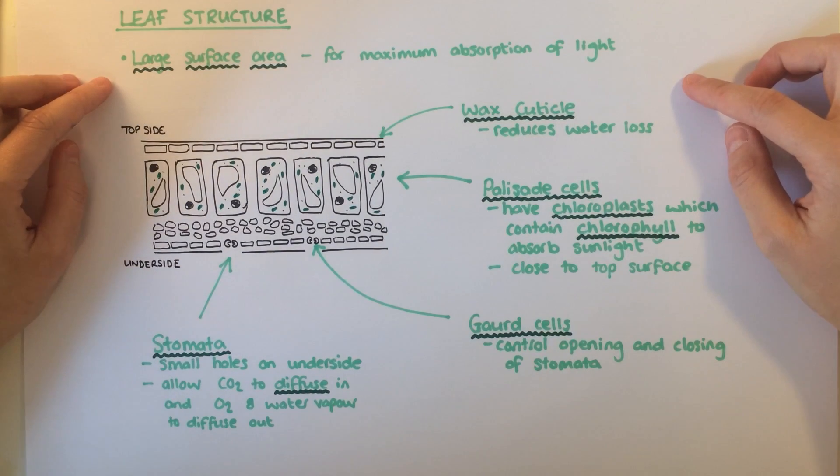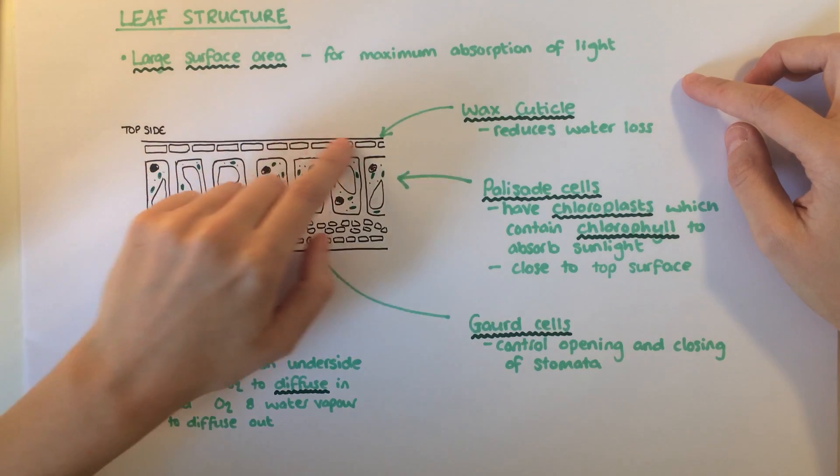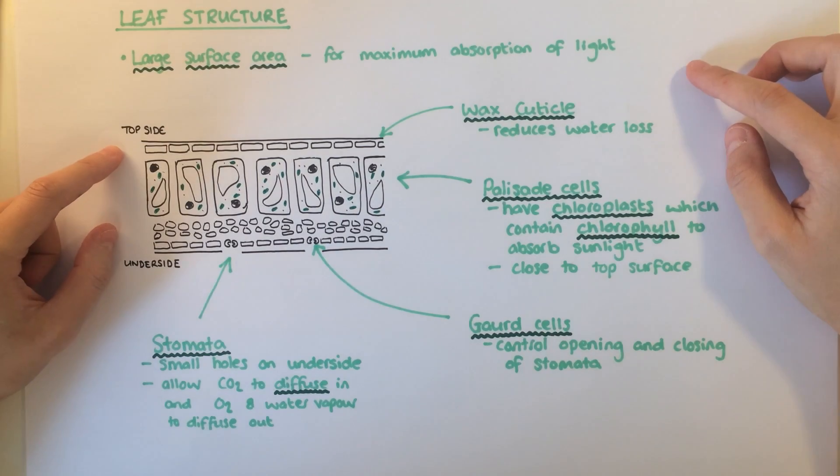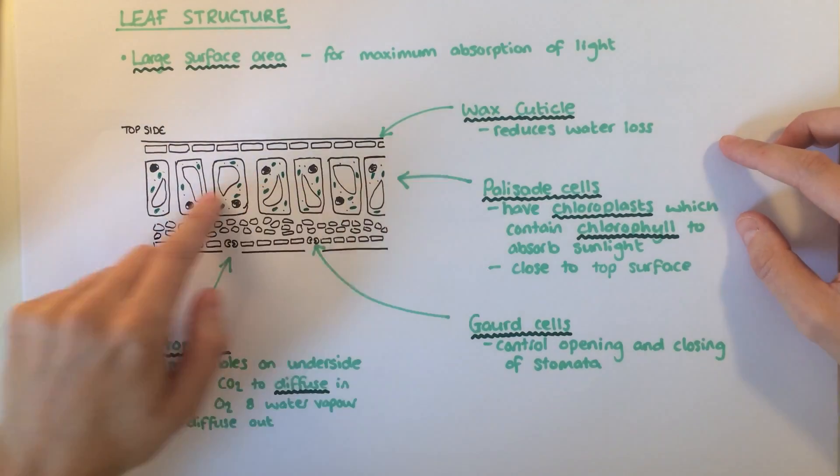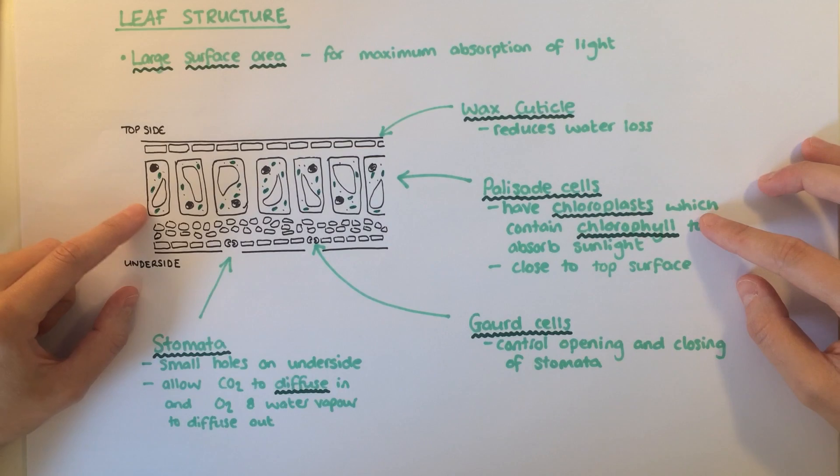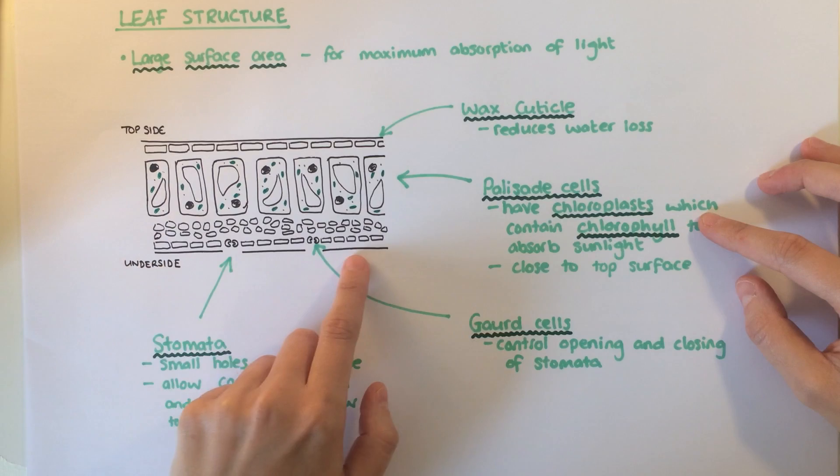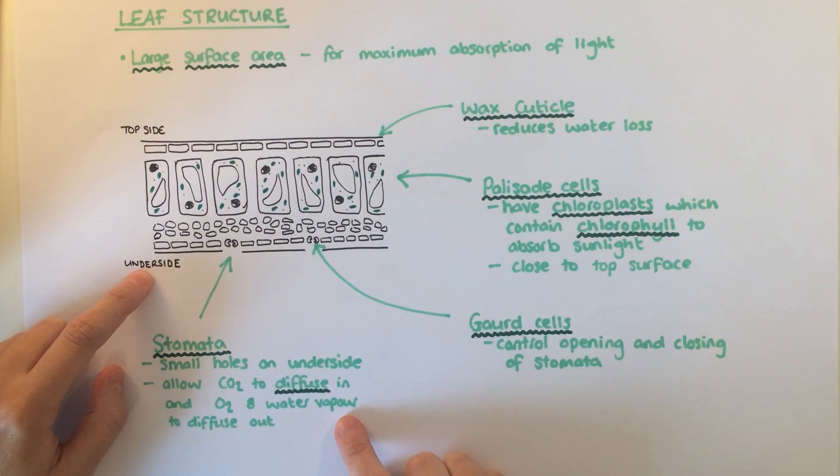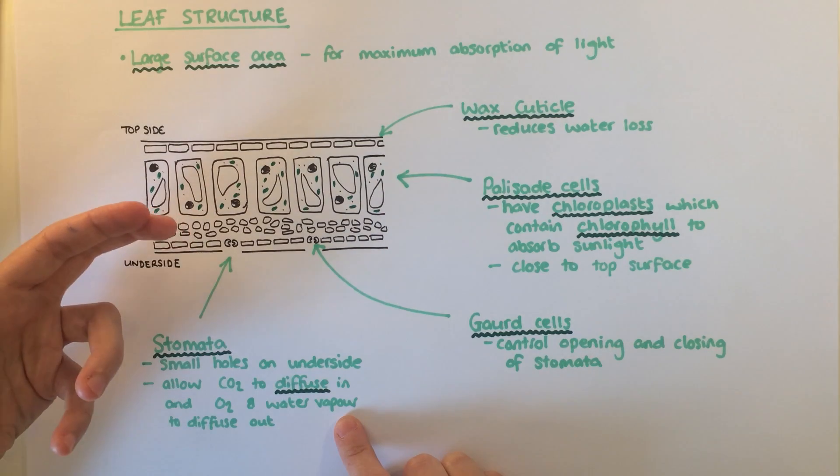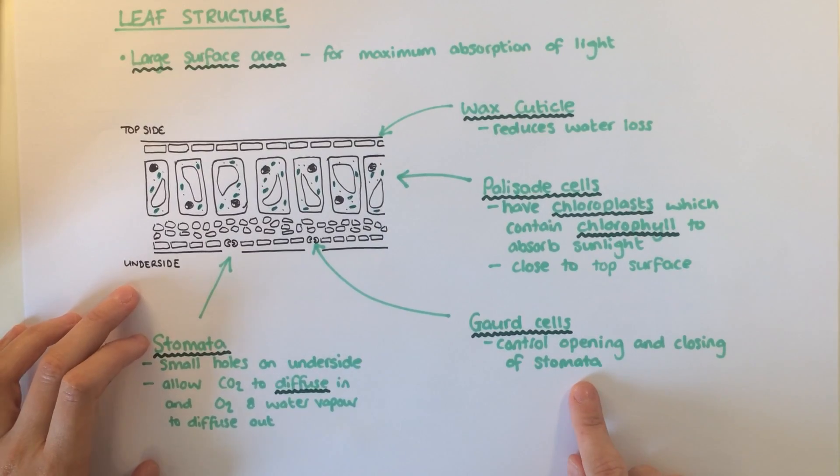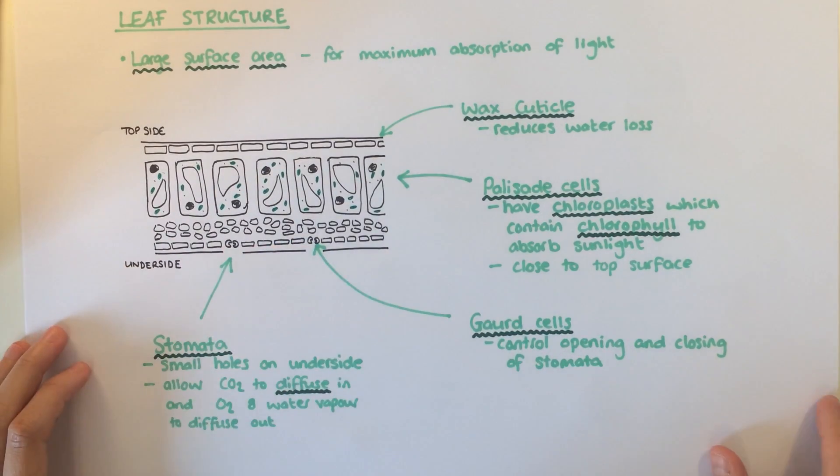The main feature of a leaf is its large surface area to enable maximum absorption of light. It has a thin structure with distinct layers. A wax cuticle, particularly on the top surface, reduces water loss. Close to the surface are palisade cells. These contain lots of chloroplasts with the green chemical chlorophyll, which absorbs light. On the underside of a leaf are small holes called stomata. These allow carbon dioxide to diffuse into the leaf and oxygen and water to diffuse out. The opening and closing of the stomata is controlled by guard cells, which are either side of the hole.